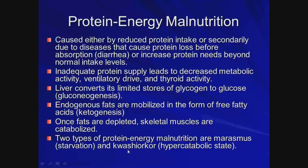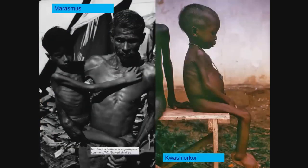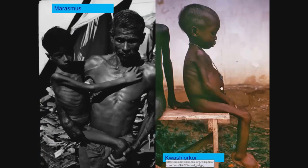There are two types of malnutrition states: marasmus and kwashiorkor. Marasmus is a starvation state, while kwashiorkor is a hypercatabolic state. Kwashiorkor is the one where patients have the large belly — even though the child is malnourished, the abdomen swells due to the underlying metabolic disturbance.